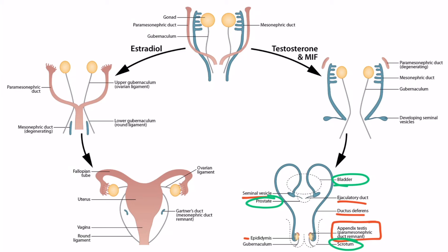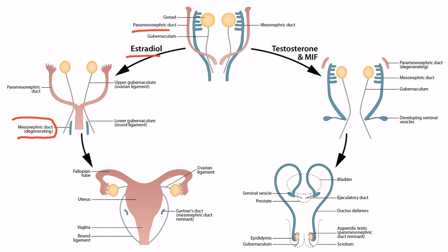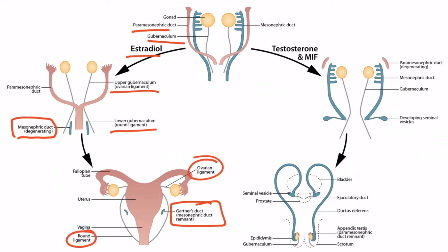Now let's focus on female development. In the presence of estradiol, which is produced from the ovaries, the paramesonephric duct will continue to develop and the mesonephric duct will degenerate. The associated remnant structure is known as the Gartner's duct, located in the broad ligament of the uterus, and may become cystic, resulting in a Gartner's duct cyst. The gubernaculum can be broken into upper and lower portions: the upper portion becomes the ovarian ligament, and the lower portion becomes the round ligament. The paramesonephric duct becomes the internal female genitalia, including the proximal part of the vagina, the uterus, and the fallopian tubes.